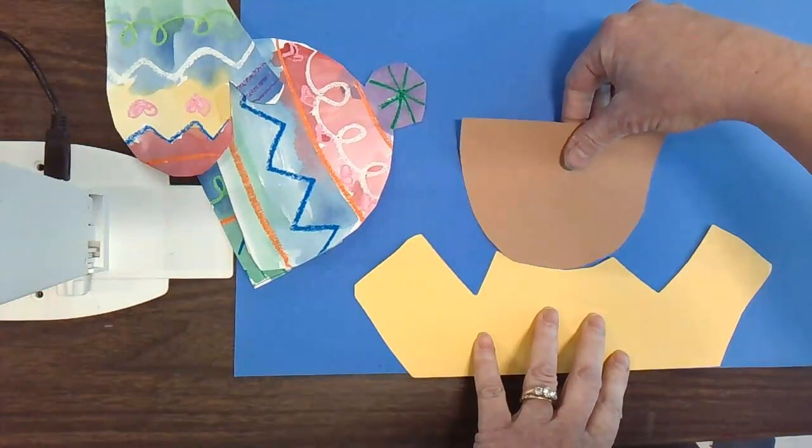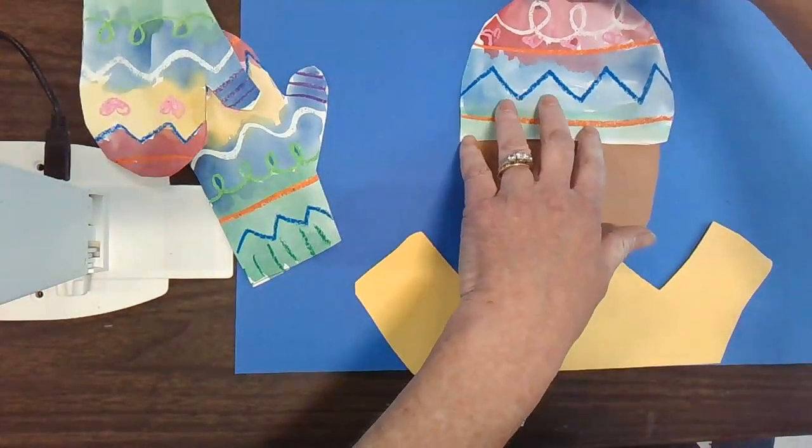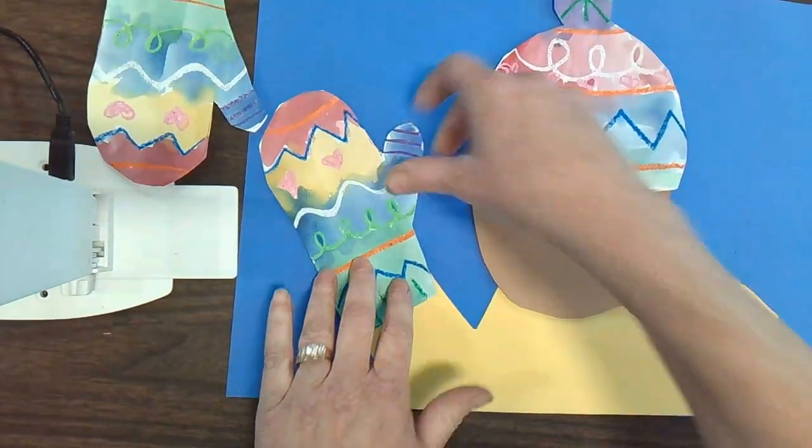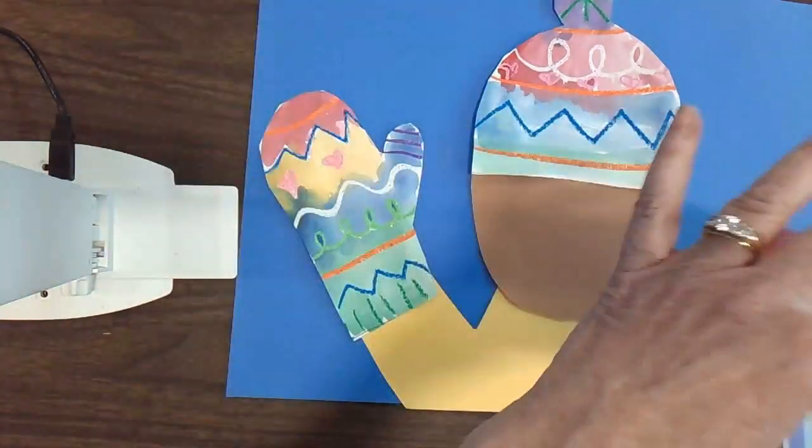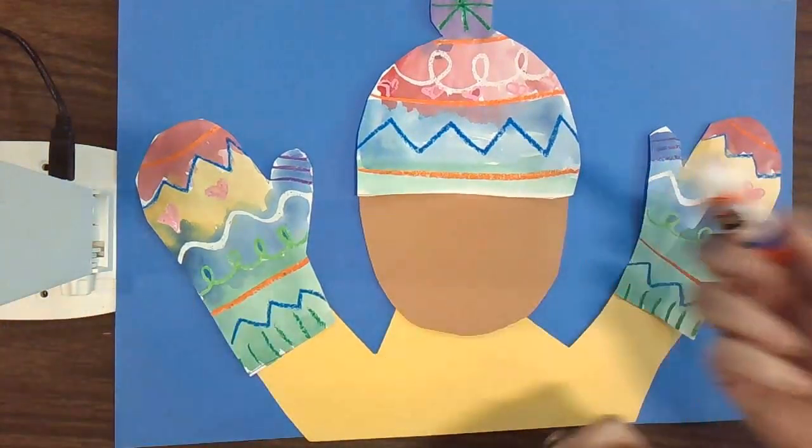The next thing you want to do is arrange the pieces all on your paper to make sure you have everything you need. So that face piece goes like a U smiling up at you, and the hat goes on the top, flat parts meet, and the mittens go right on the ends of the arms.